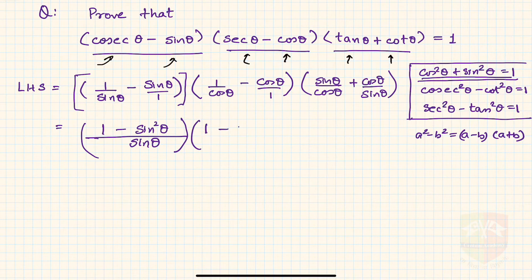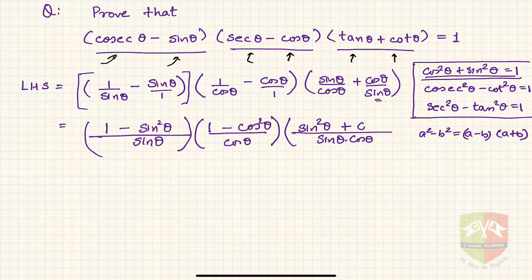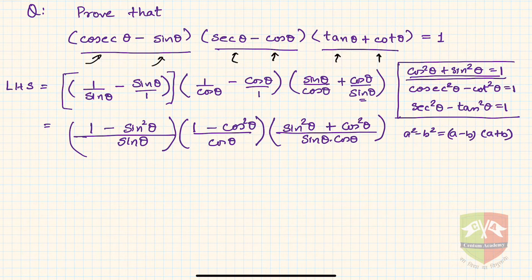Similarly, the second factor becomes 1 minus cos squared theta over cos theta. For the third factor, the LCM is sine theta times cos theta, so the numerator becomes sine squared theta plus cos squared theta — which equals one — giving 1 over (sine theta times cos theta).